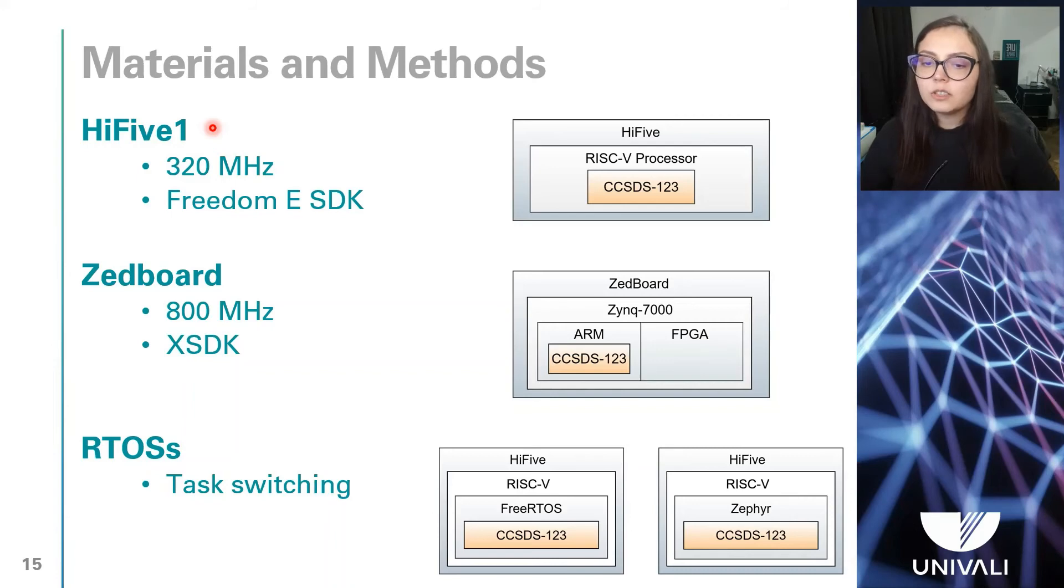The value on the register was read using a function in the assembly language, at the start and at the end of the algorithm execution, and the difference between these two values is the number of cycles that was used by the processor.